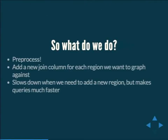So what do we do? We preprocess. You can add a new column or a join table. It slows things down when we add a new region, but it makes queries much faster — you now have a table where you're doing just a grouping query on the ward instead of on a point and its geometries.